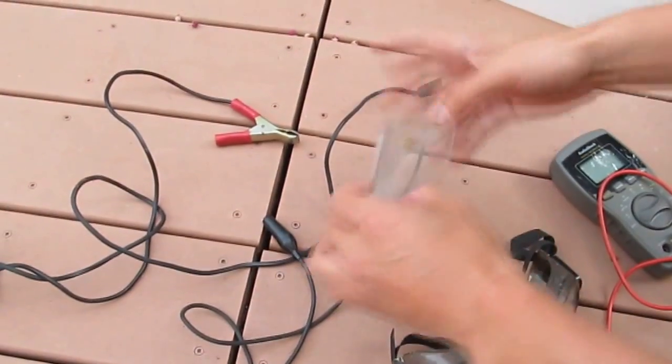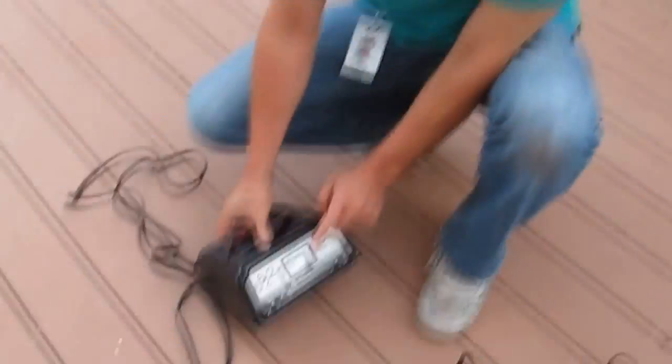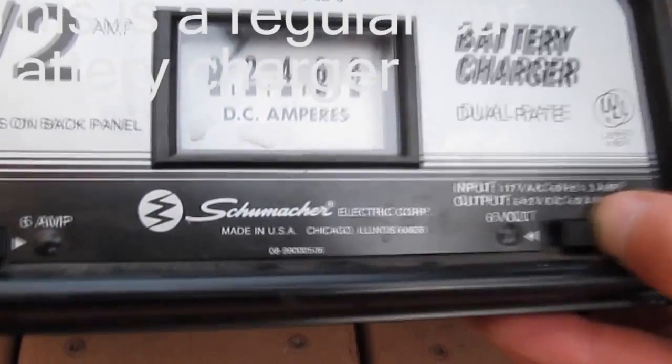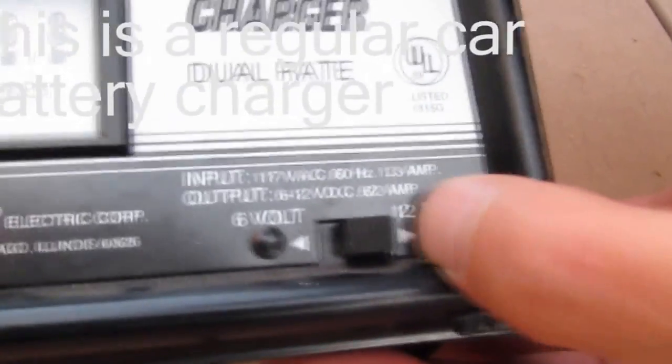And after this, I really need to protect my eyes, just in case there's an accident. And this is a battery charger for a car. You can change, this one has a setting in there, 6 volt or 12 volts. So I'm going to try 6 volts first.